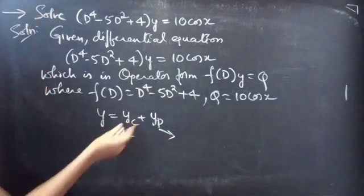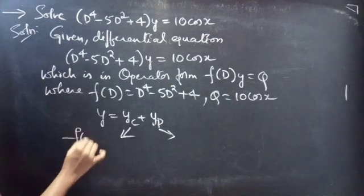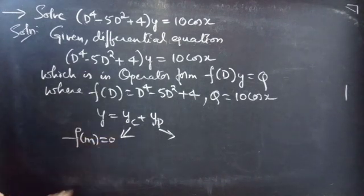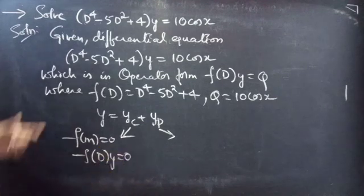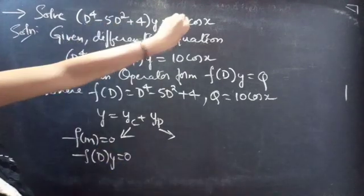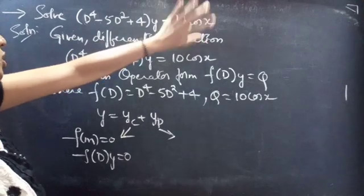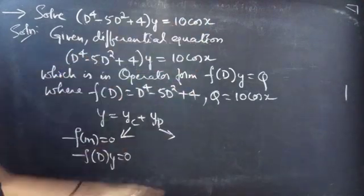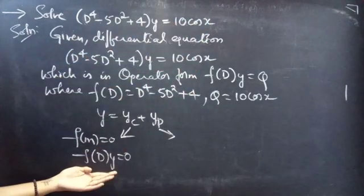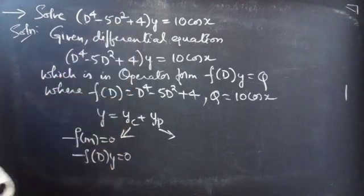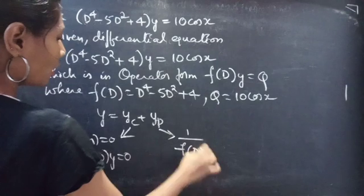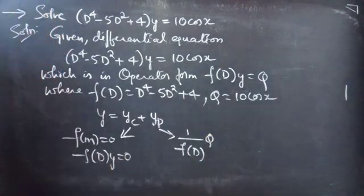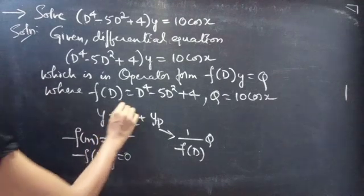Here, yc is the complementary function and yp is the particular integral. We will find the complementary function using the roots of the auxiliary equation of the homogeneous equation of the given non-homogeneous equation. Simply put RHS to 0, then we get f(D)·y = 0. We will find yp using (1/f(D))·Q. So firstly, let us find yc.